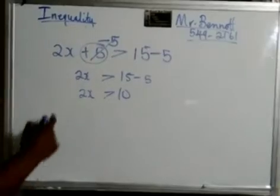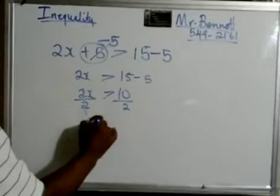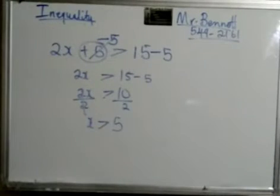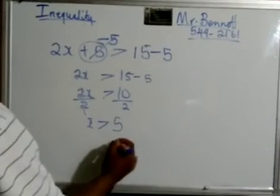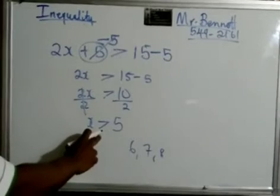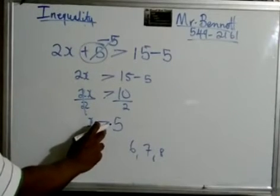So therefore, we divide by 2. So x is greater than 5. And x greater than 5 would be 6, 7, 8. Notice, because it's greater than, we do not include 5. Not just 5. We don't include 5 because it doesn't say greater than or equal to.